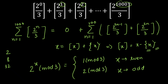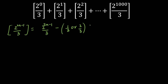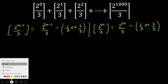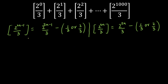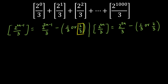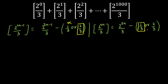Now applying GIF(x) = x − {x}: for GIF of 2 raised to power 2n−1 divided by 3 (the odd power term), I write it as 2 raised to power 2n−1 divided by 3, minus the fractional part. Since the remainder for odd powers is 2, the fractional part is 2/3 — we select 2/3 and reject 1/3. For GIF of 2 raised to power 2n divided by 3 (even power), I write it as 2 raised to power 2n divided by 3, minus the fractional part. Since the remainder for even powers is 1, the fractional part is 1/3 — we select 1/3 and reject 2/3.